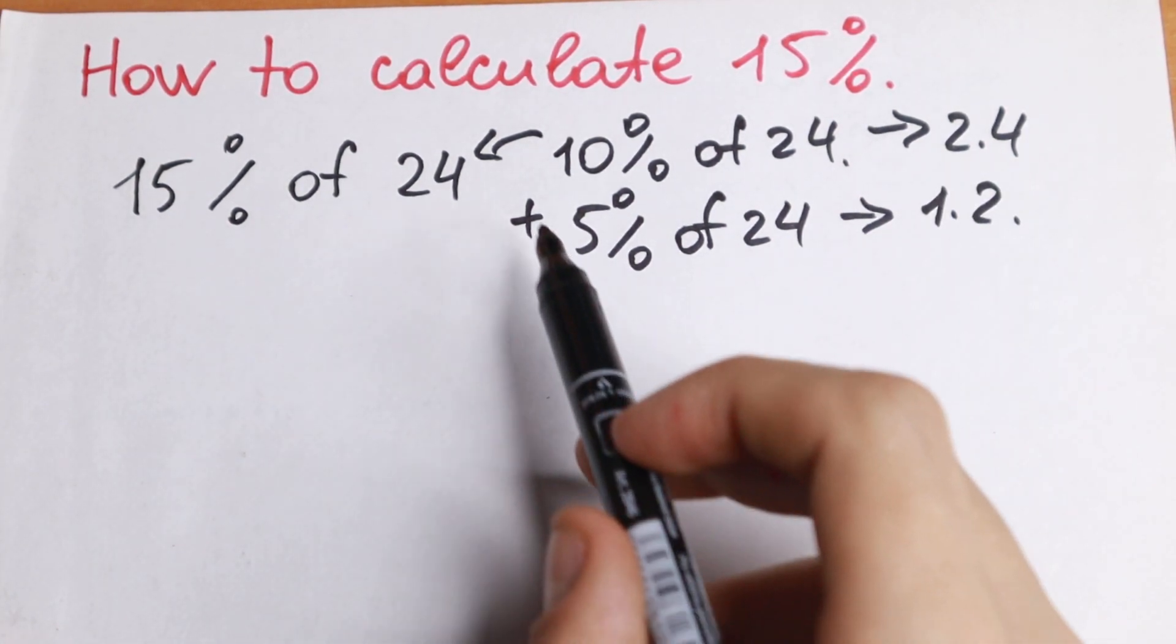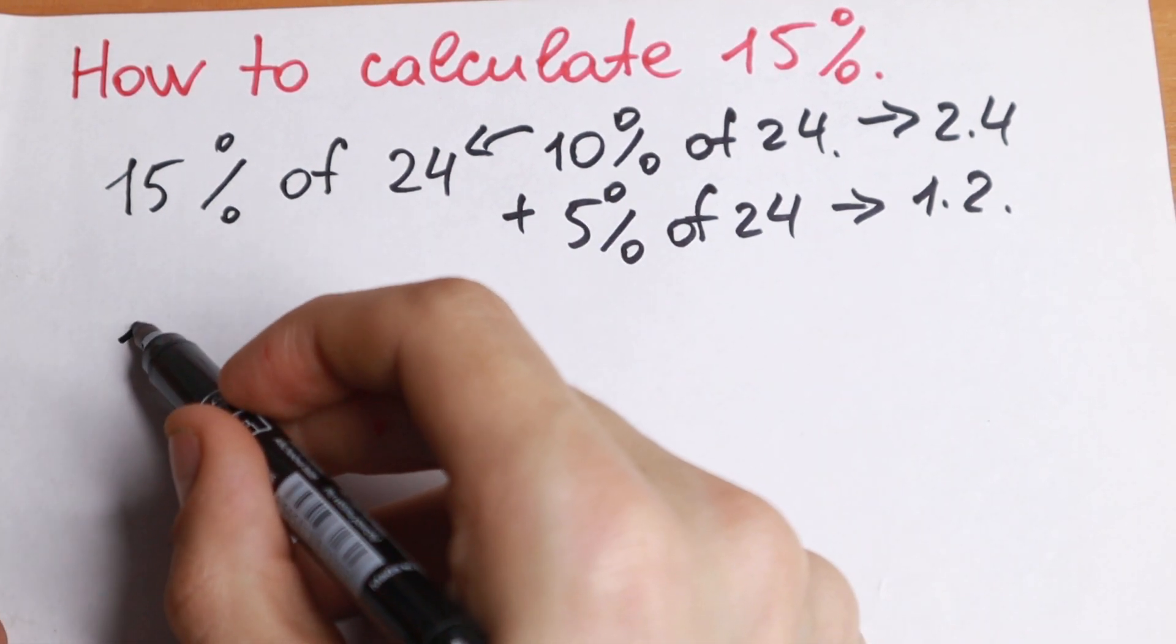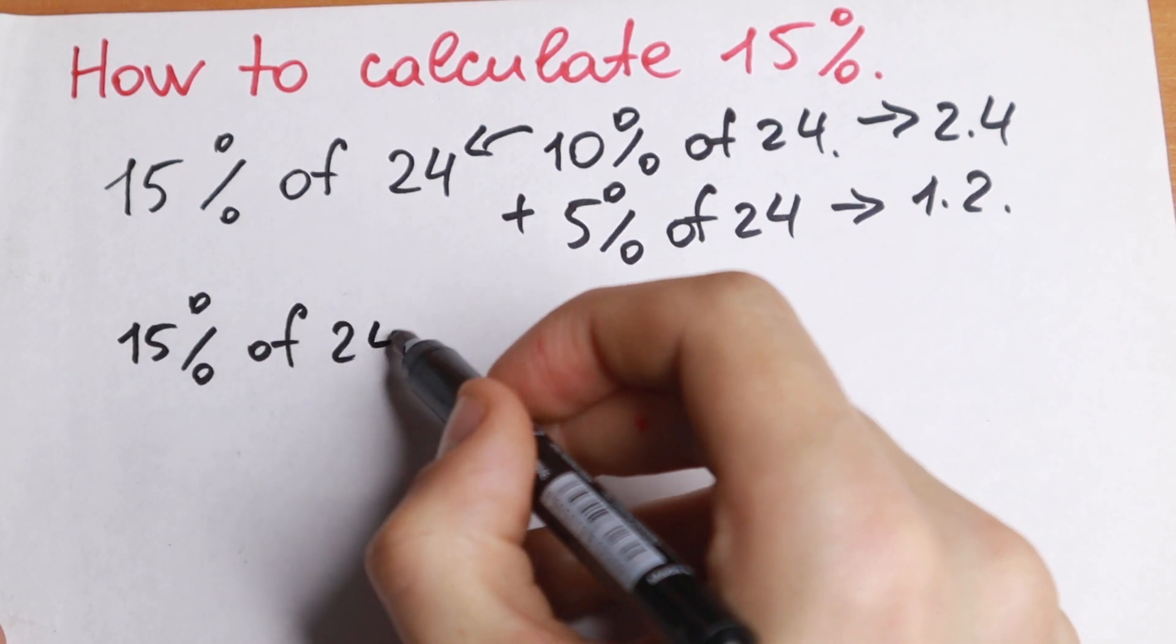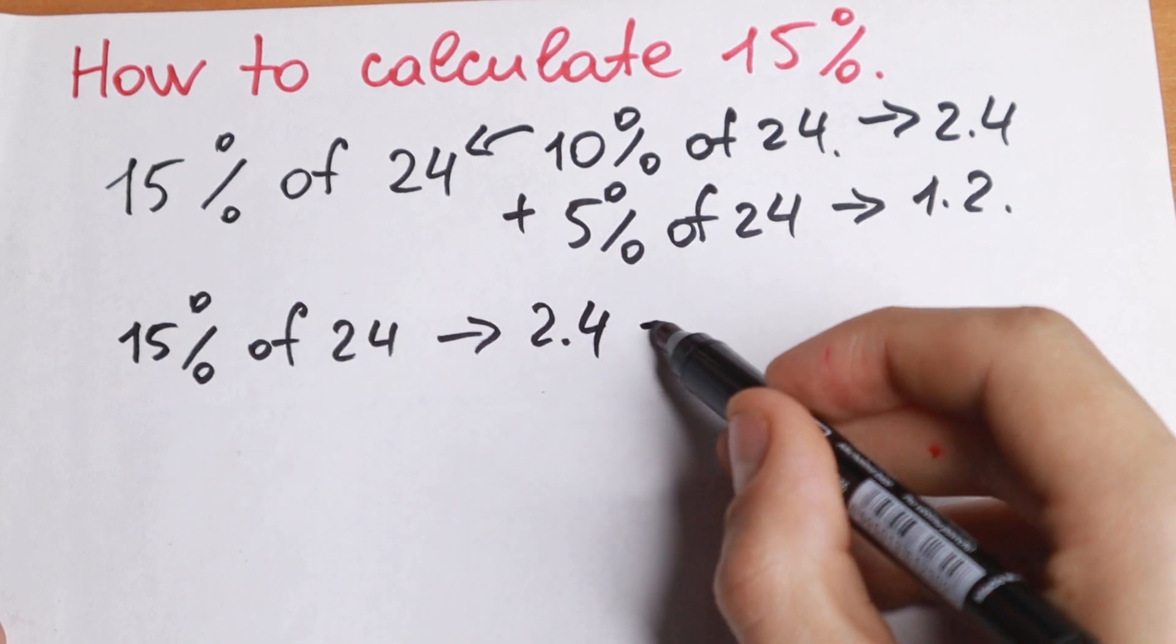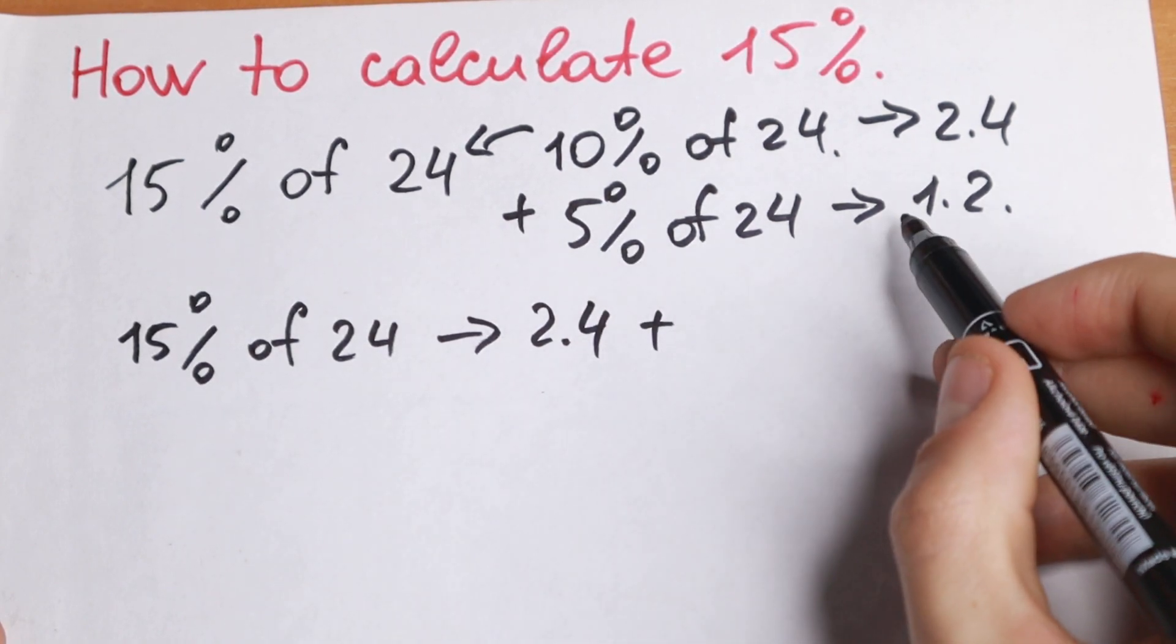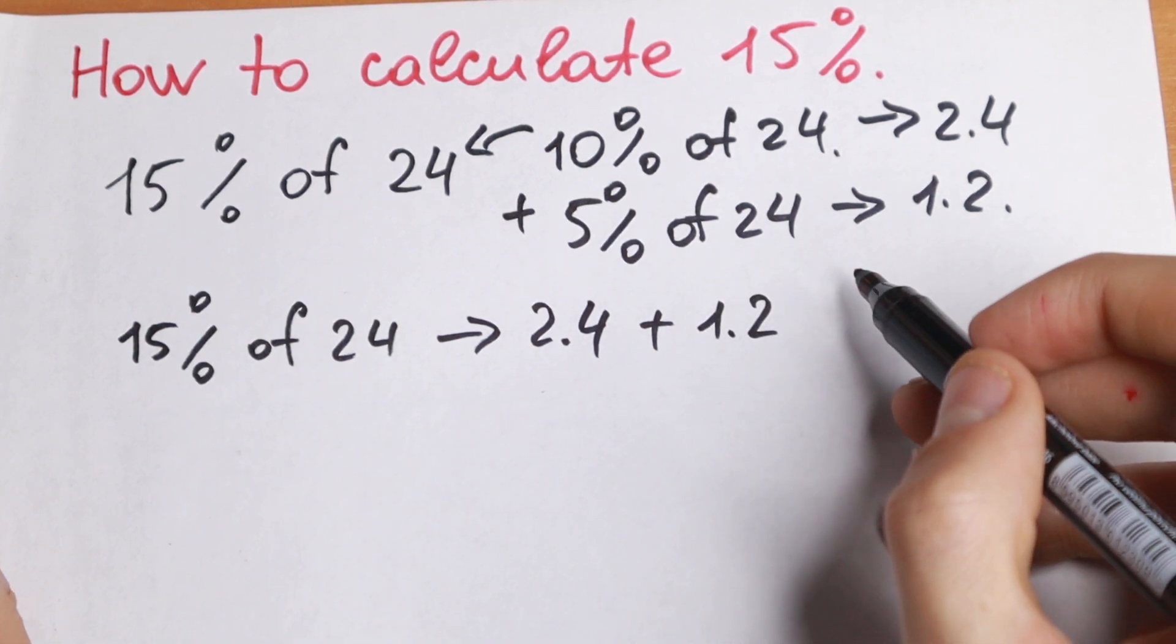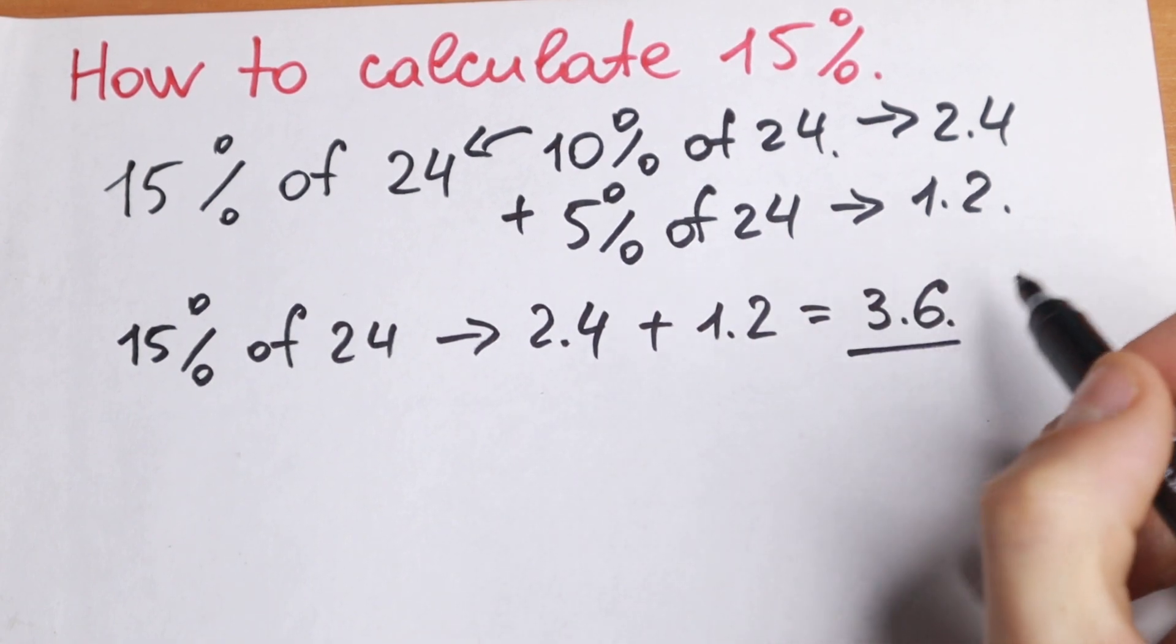So as you can see, we find 10% and we find 5%. So our rule 15% of 24, it will be equal to 10% of 24, 2.4 and plus 5%. 5% of 24 is 1.2. So our final answer will be, as you can see, 3.6.